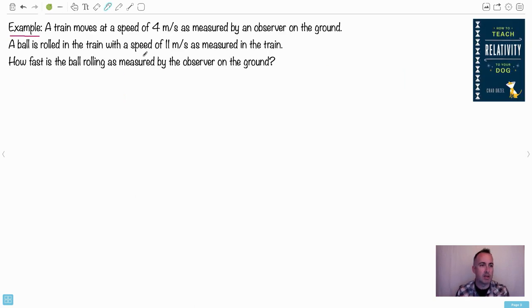So I want to show you an example then. So we have an example. The world's most boring example. Let's do it with a train here. So we've got a train here. And it's moving at a speed of 4 meters per second as measured by an observer on the ground. So here's me on the ground. So I'm watching this train move. So in this case right here then this speed, remember this speed is going to be 4 meters per second. That's going to be V. Now a ball is rolled in the train with the speed of 11 meters per second as measured in the train. Now what do we mean by that? We mean within the train's frame of reference.